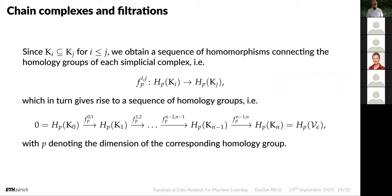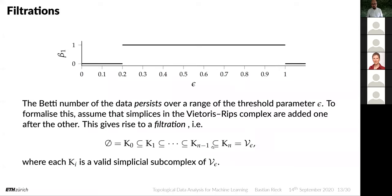Is every K_i necessarily a Vietoris-Rips complex in this filtration? In this filtration yes, because you can always find a parameter that gives you a Vietoris-Rips complex for this. Later on, we will never have to calculate more than one Vietoris-Rips complex — we only have to calculate the big one and we get the smaller ones automatically. Since everything is nested, you get all the information from the large complex. You don't have to look at all those individual complexes. K stands for an arbitrary simplicial complex and V represents the Vietoris-Rips complex for a certain threshold — V is the big one, the K's are the ones we get for free.